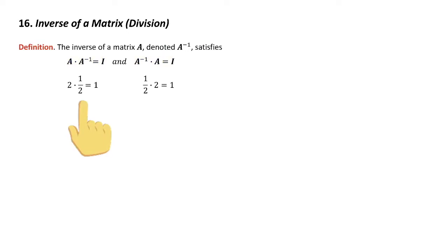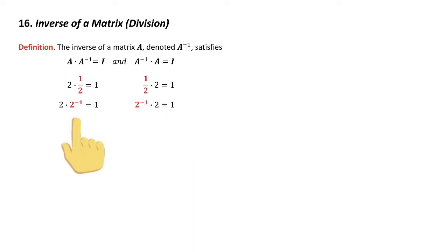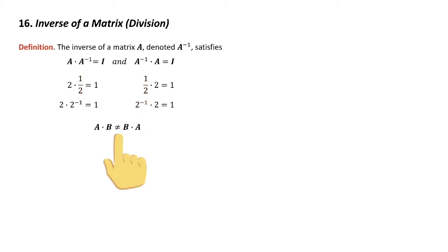Think about what we have in real numbers. If you have 2, the inverse of 2 is 1 half, because 2 times 1 half is 1, and 1 half times 2 is 1. So where does the notation come from? You could write 1 over A, but we write it as A to the minus 1, since 1 half is 2 to the minus 1 power. We need both relationships because A times B does not equal B times A for matrices, so you need to do it both ways.